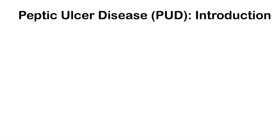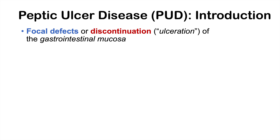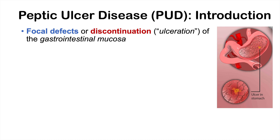Before we get into the signs and symptoms of peptic ulcer disease, what is peptic ulcer disease? It is a disease of focal defects or discontinuation — which really means an ulceration — of the gastrointestinal mucosa. So the lining of the stomach and the lining of the duodenum, which is the first part of the small intestine. Here's your stomach, and here is the duodenum, and you can have ulcerations occurring in the stomach and the duodenum, and also in the esophagus as well, but we're not going to talk about those as much here.